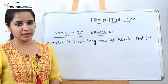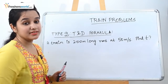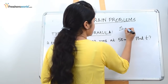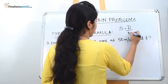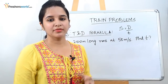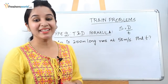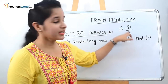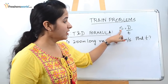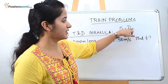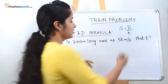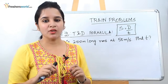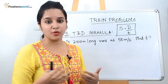Type 2 of the train problems is the time and distance formula. The formula to remember is: speed equals distance divided by time. This is the most common question you can face in any aptitude exam. They will either give you the distance and time and ask you to find the speed, or give you the speed and time and ask you to find the distance, or vice versa. Let's solve a simple problem to understand the formula better.